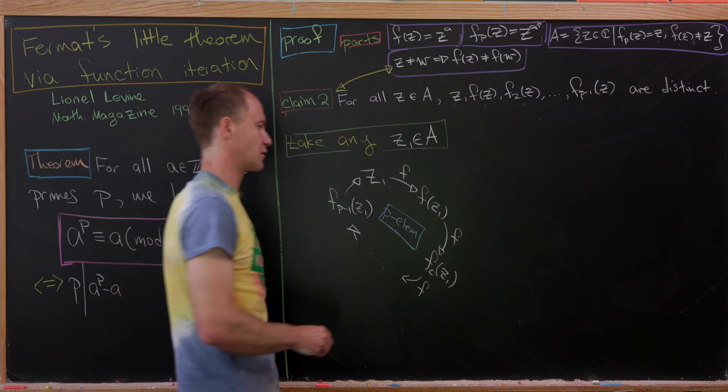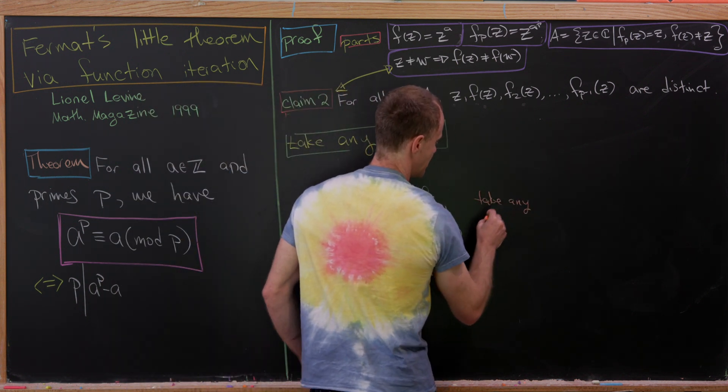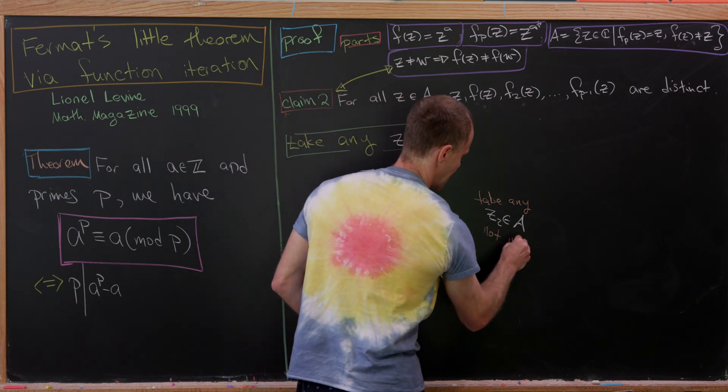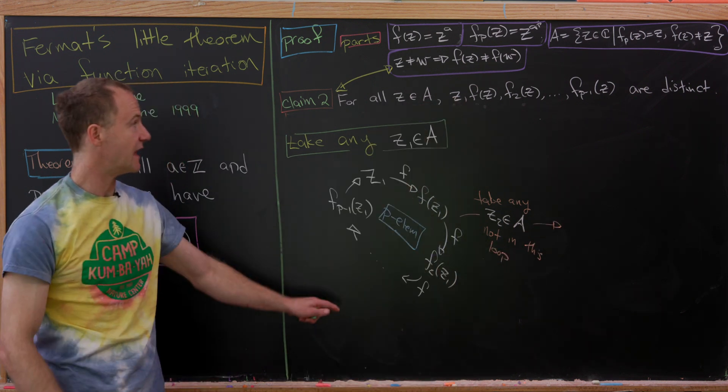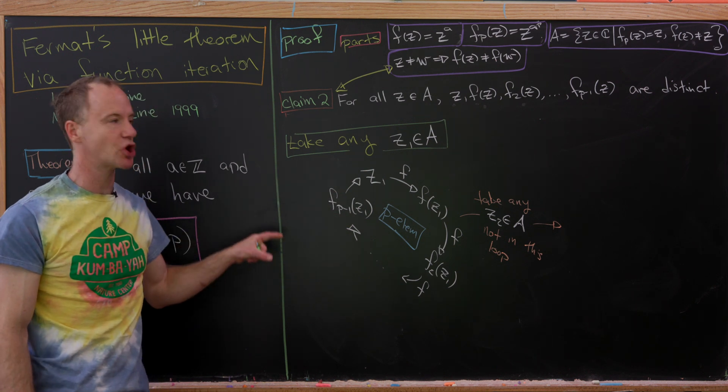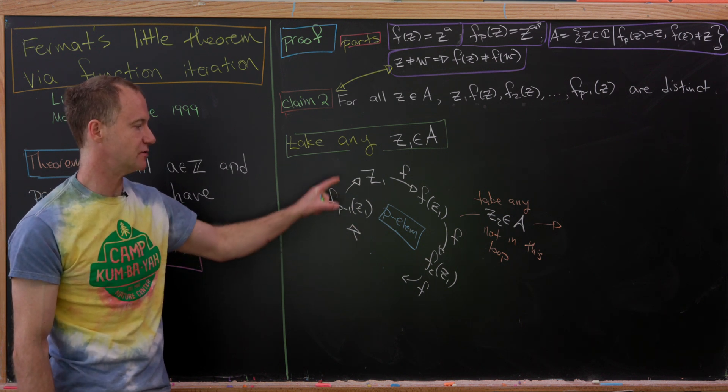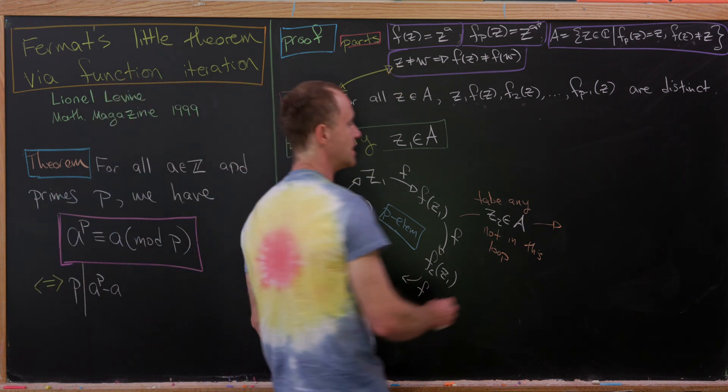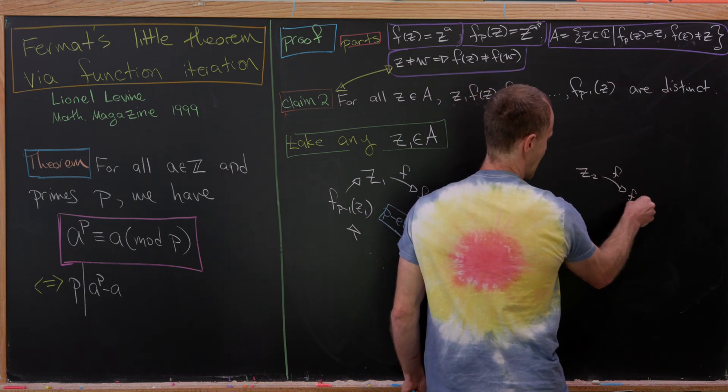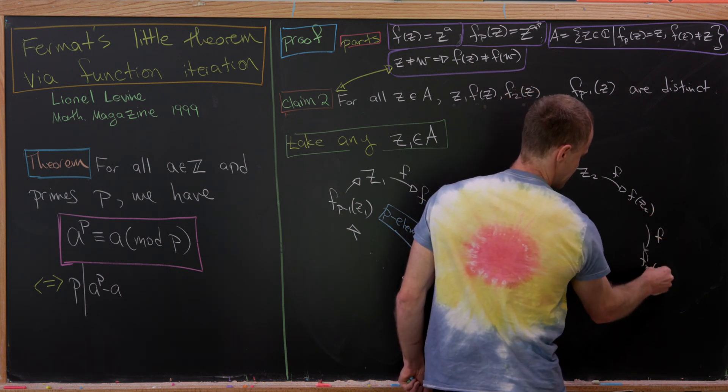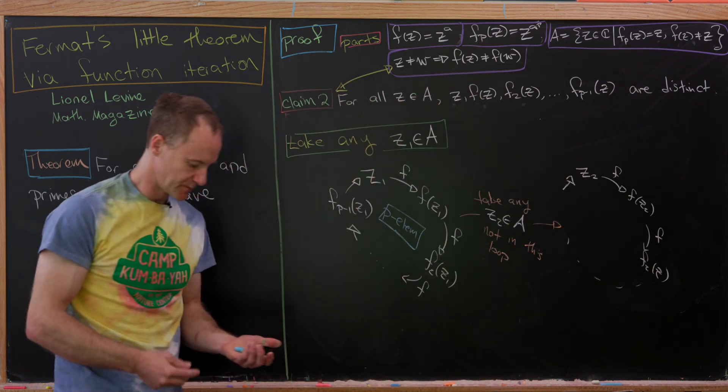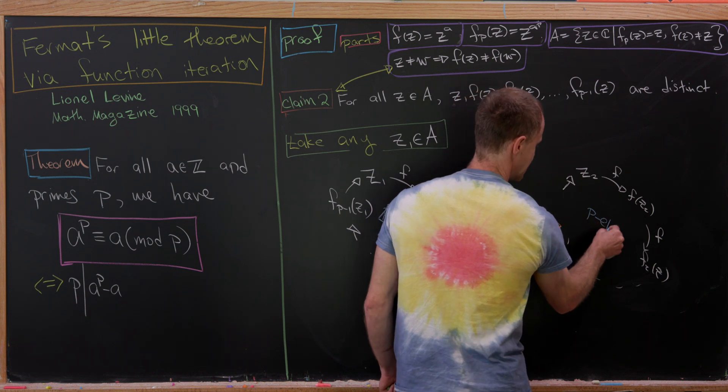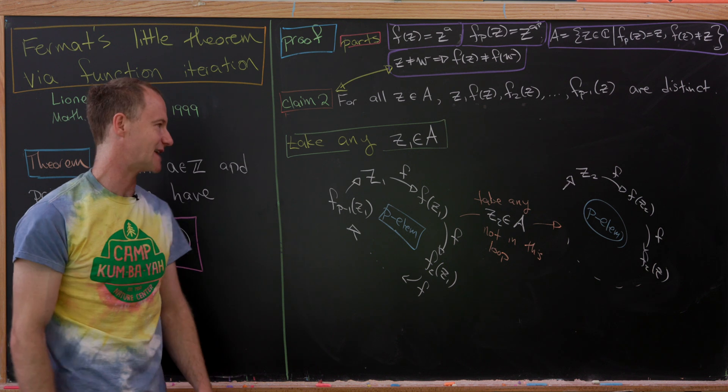And now we're going to move on from this, and we're going to take any, maybe I'll call it Z2 inside of A, outside of this loop. So I'll write it like this. So not in this loop. Good. And then because of this first claim, that's going to complete a totally disjoint loop. Notice, like I said, it will not overlap with this loop because if it did overlap with this loop, then, well, we would have this claim right here, not satisfied. Okay. So anyway, we've got another loop right here. Z2 applying F, we get F of Z2 applying F again, we get F sub 2 of Z2 all the way around. But now we've got another loop, and how many loops is this? And how many elements are in this loop? There are exactly P elements in this loop, kind of just by easy counting.